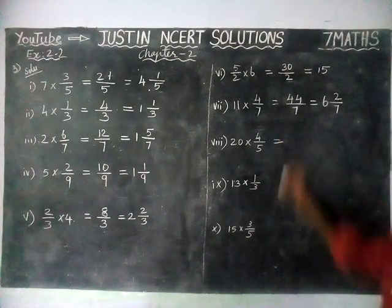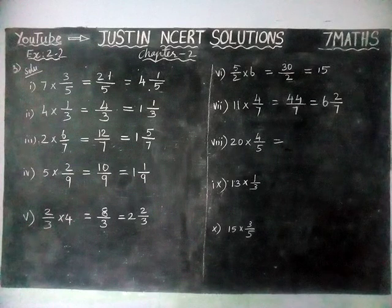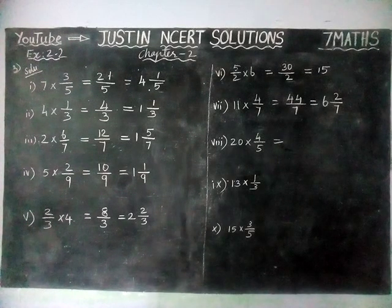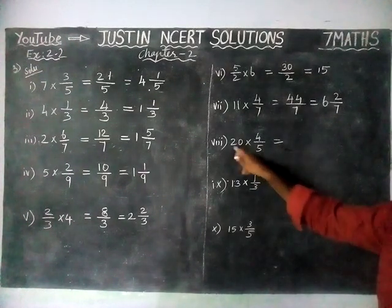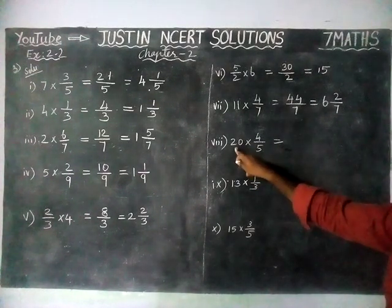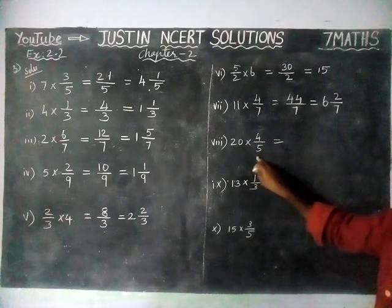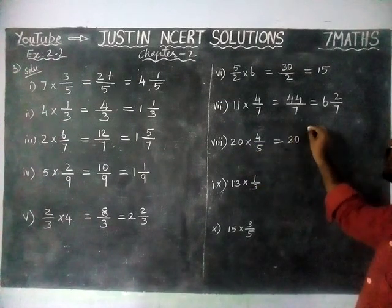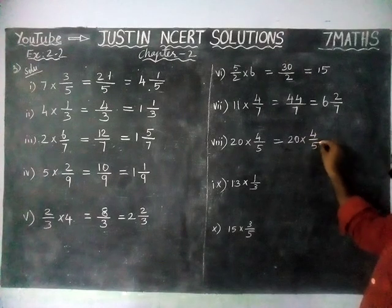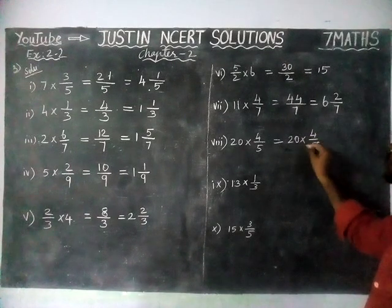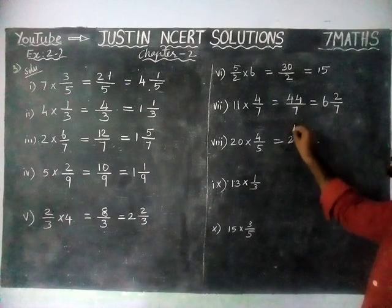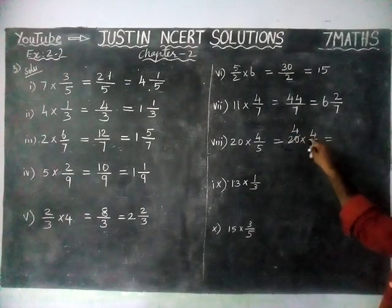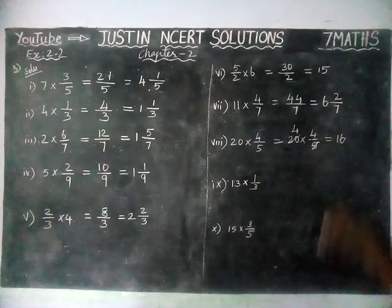8th question: 20 into 4 by 5. If it is possible, we can simplify here itself. 1 five is 5, 4 fives are 20. Now 4 into 4 — 4 fours are 16. So the answer is 16.